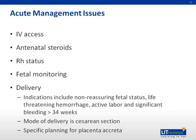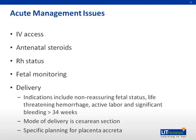Providers should move toward delivery if fetal status is non-reassuring despite resuscitative measures, if hemorrhage is life-threatening, if the patient is in active labor, or if significant bleeding occurs after 34 weeks gestational age. Cesarean delivery is necessary in nearly all women with placenta previa. In the case of placenta accreta, special precautions should be taken given the significant chance of hemorrhage at the time of surgery. These precautions include preoperative arterial catheter placement for possible uterine artery embolization, coordination with the blood bank for transfusion services, and consultation with gynecologic oncology for surgical assistance if cesarean hysterectomy is required.